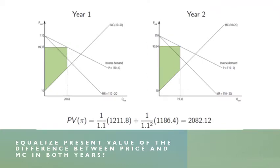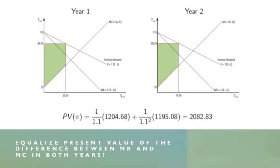Let's equalize the present value of the difference between price and marginal cost in both years. With that approach we get profits of $2,082.12 — slightly better. Can we do even better? Can we equalize the present value of the difference between marginal revenue and marginal cost in both years? Doing so, the monopolist achieves present value profits of $2,082.83 — still doing better.